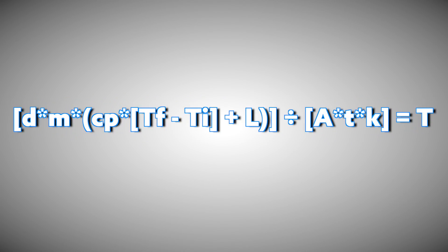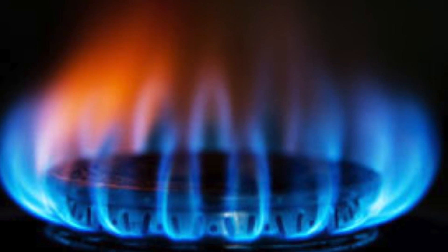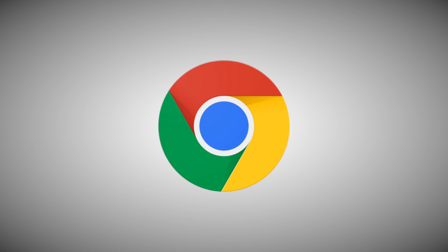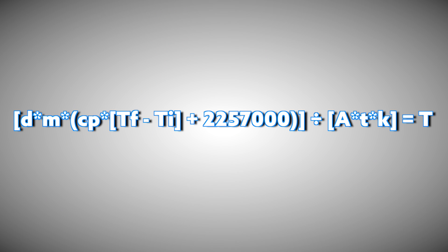Let's just fill this thing in bit by bit. When I say L, what I actually mean is how much energy it takes to turn water into steam. And since we all know Google is the most reliable source, I used it — I found this thing. Let's use this.